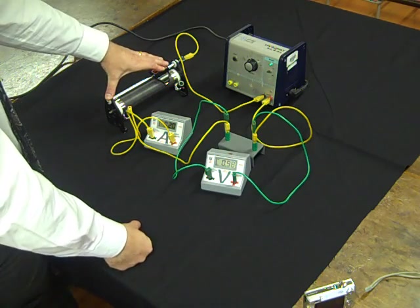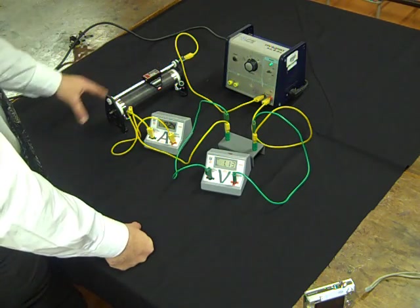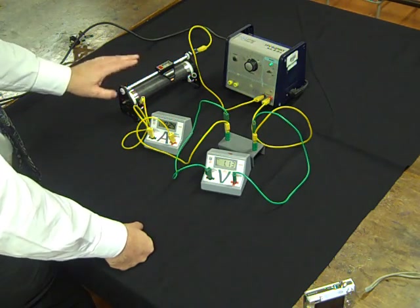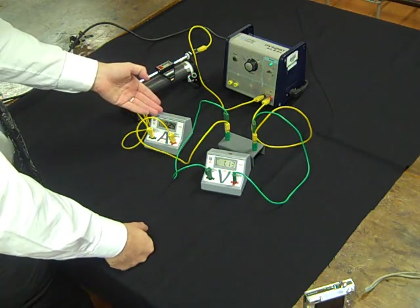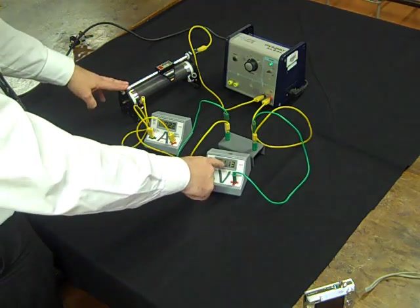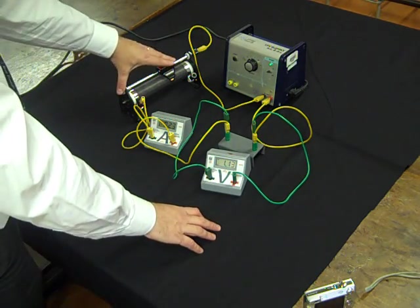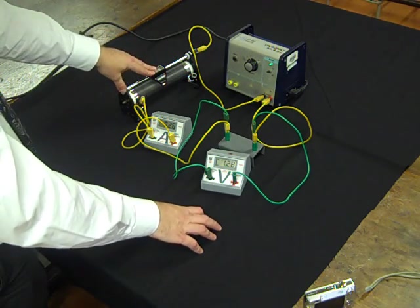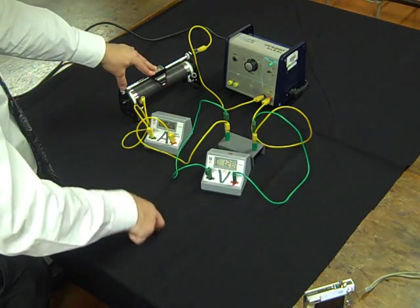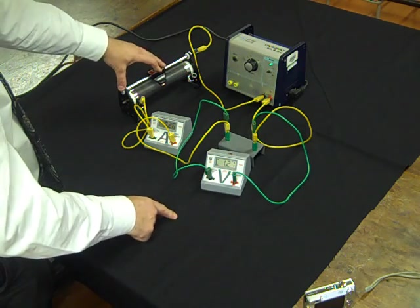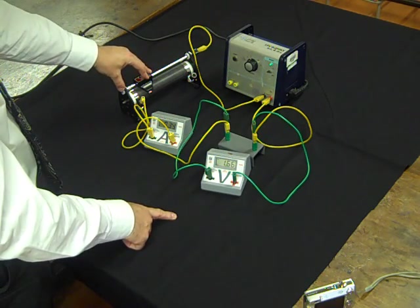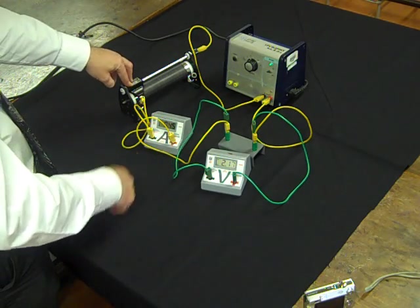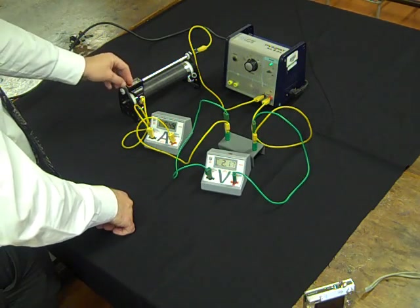I can now adjust it by moving the variable resistor, also sometimes called a rheostat. Now I've got a reading of 0.24 amps and 1.13 volts. In this way, we can get a number of different readings: 0.26, 1.25, up to a maximum of 0.45 amps and 2.15 volts.